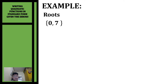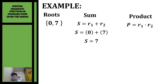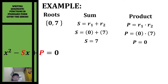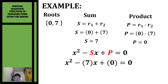Let's have another example. We're going to write the quadratic function given the roots 0 and 7. We need the sum and product of our roots. Adding: 0 plus 7 gives a sum of 7. Multiplying: 0 times 7 gives a product of 0. Substituting into the formula x squared minus sx plus p equals zero, we get x squared minus 7x plus 0 equals zero.